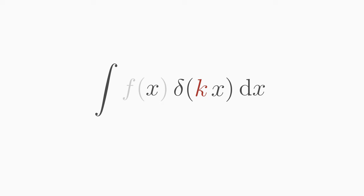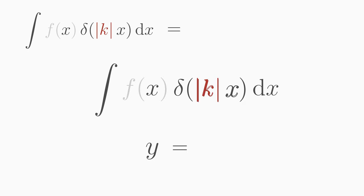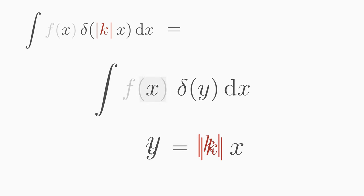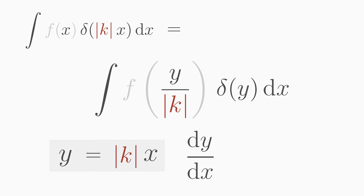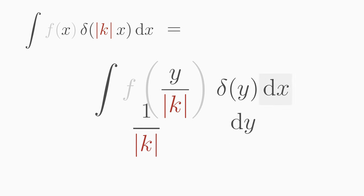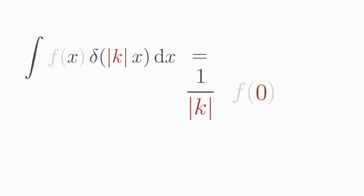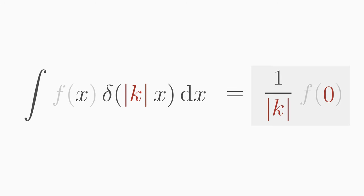What happens if we scale x in the delta by a factor k? If k is negative, we can write it as a negative magnitude and omit the minus sign because the delta function is symmetric. Making the substitution y equals kx: delta of kx becomes delta of y, and f becomes f(y/k). The derivative of y with respect to x is k, so we substitute dx with (1/k) dy, placing 1/k in front of the integral. This integral picks the value of f at y equals zero, giving (1/|k|) times f(0). Note that k must not be zero, to avoid division by zero.